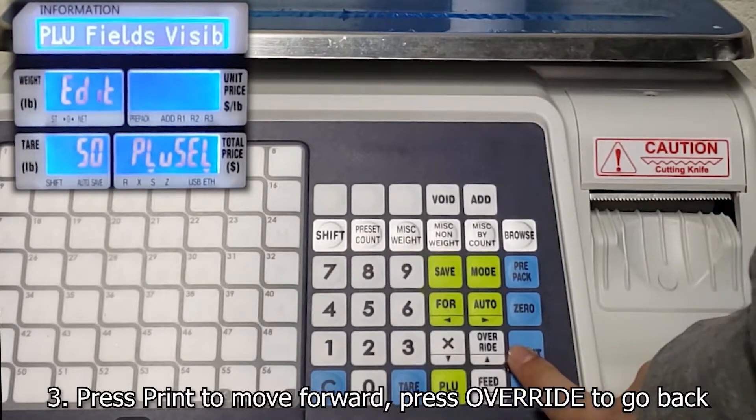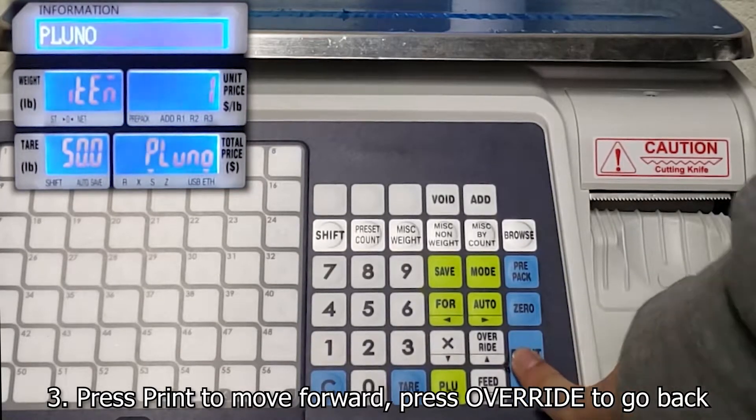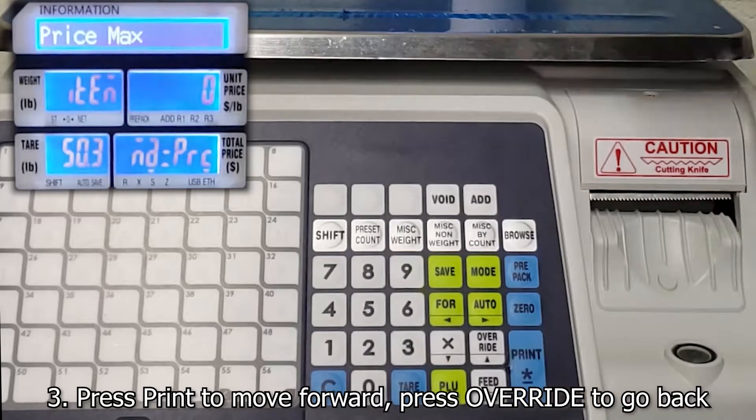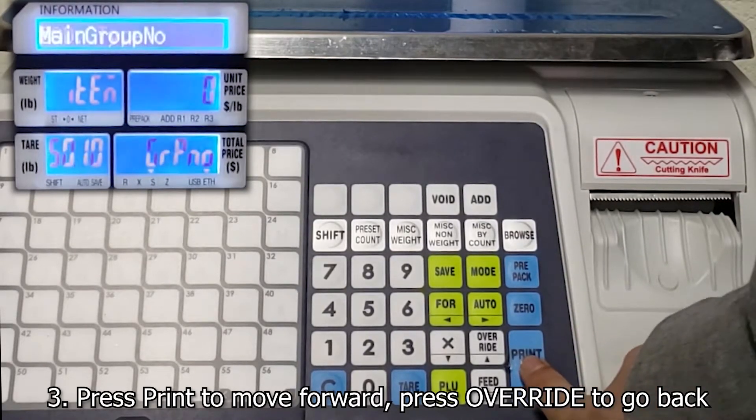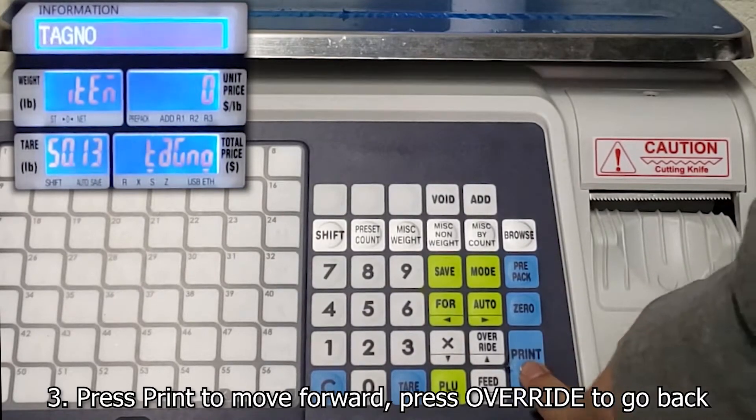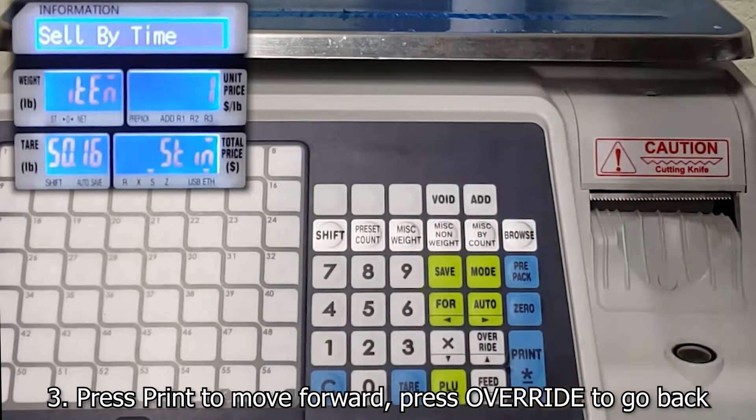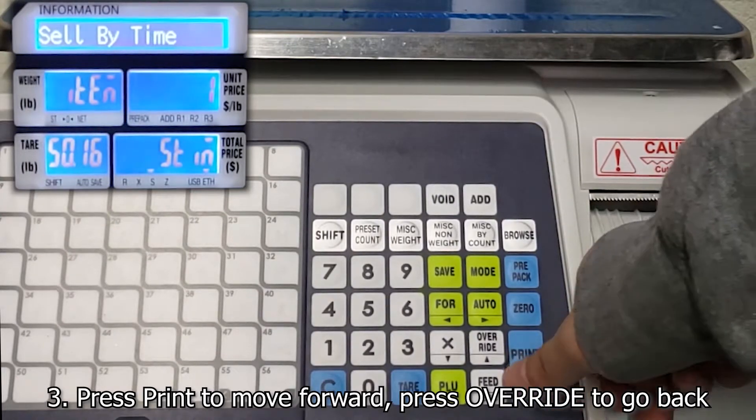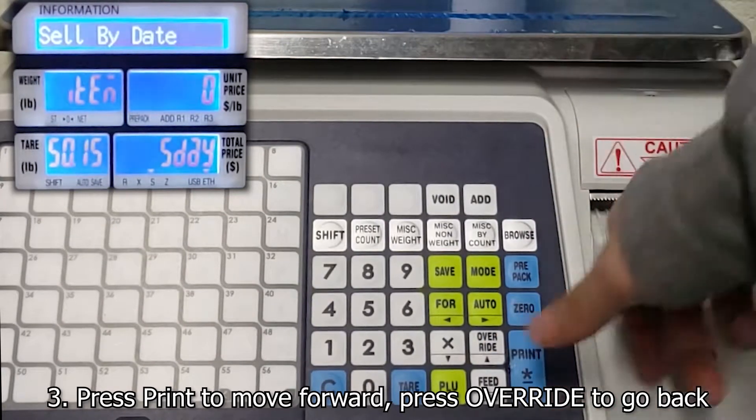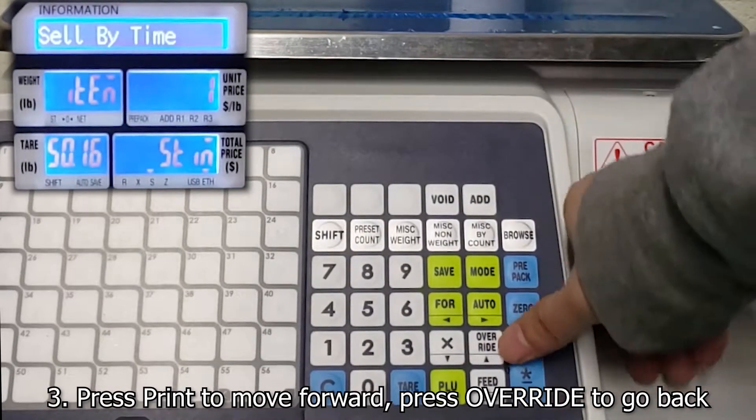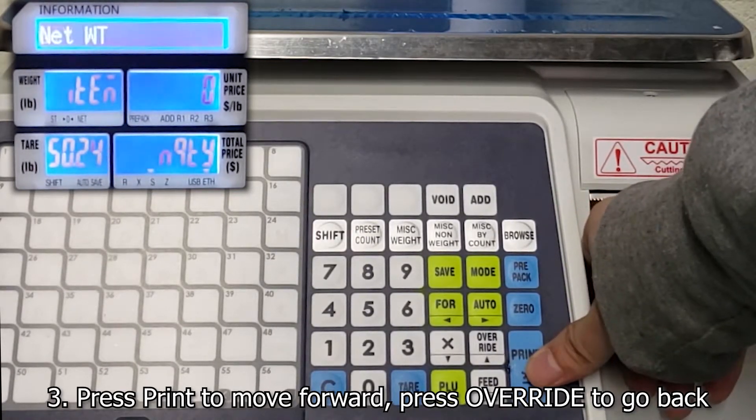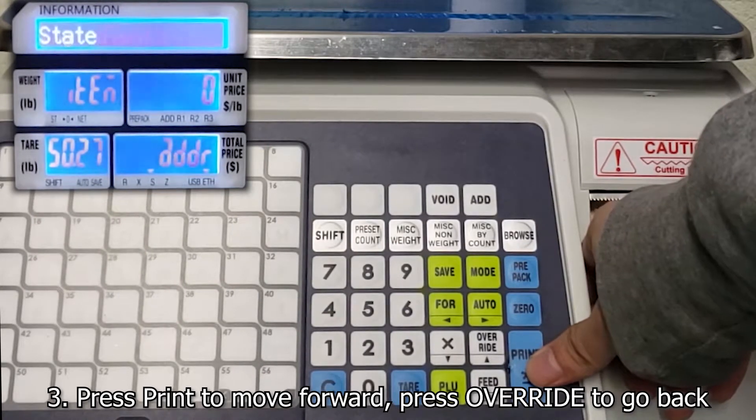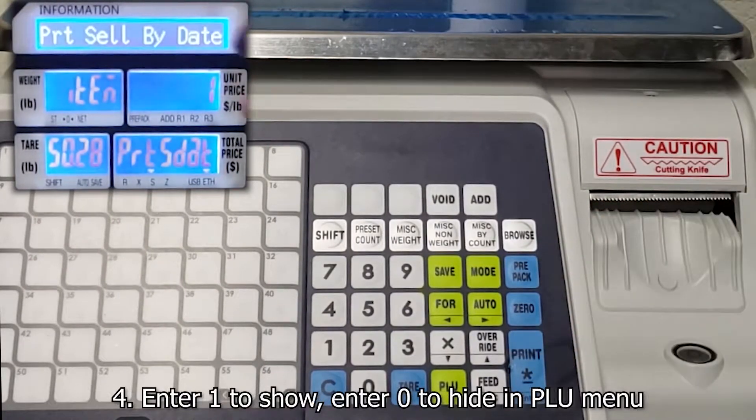Here you press print and you just go through the settings through print. So for example, I might not want my print sell by date to show in my menu because I'm always going to have that PLU as one. So here's print sell by date, it's one right now, but I don't want that to show in my menu.